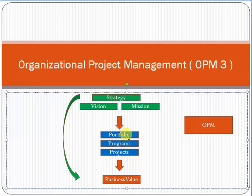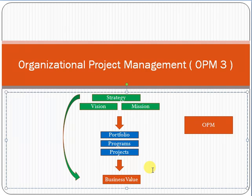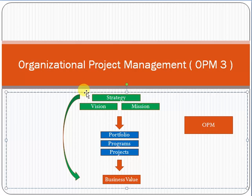As per their vision and mission, a company aligns their portfolio, programs, and projects according to their strategy. By aligning the portfolio, programs, and projects, the business value they want to achieve will be realized. However, many times it happens that the business value being achieved is not aligned with the strategy of the organization.